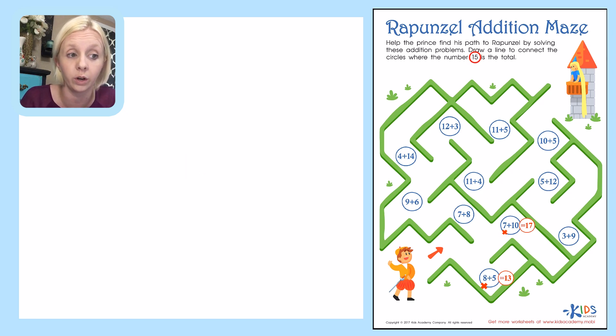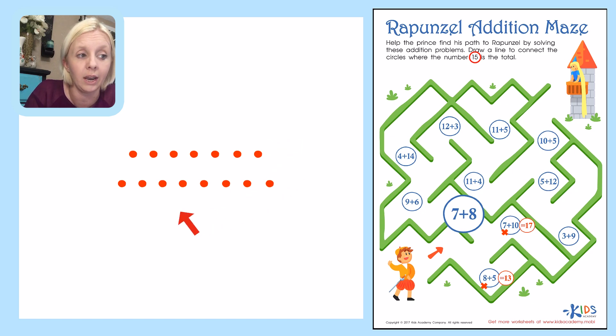So I'm going to go on to this one over here, 7 plus 8, and see if that's the direction I need to go. So I'm going to also go back over here again to the side and just write that out. So 1, 2, 3, 4, 5, 6, 7, plus 8: 1, 2, 3, 4, 5, 6, 7, 8. Okay, so I'm going to count on from 7. So 7, 8, 9, 10, 11, 12, 13, 14, 15. So that is the direction that I needed to go.